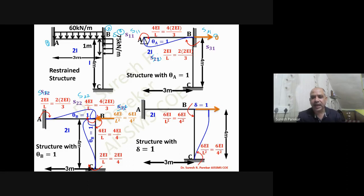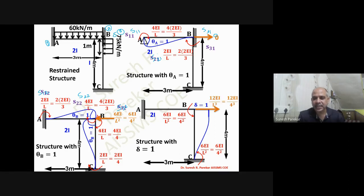Since moments are anti-clockwise, the reaction at C must be clockwise to balance. Taking moments about C = 0: minus 6EI/4² minus 6EI/4² + RB·4 = 0, giving RB = 12EI/4³. This stiffness value is at position S33, S13, and S23.